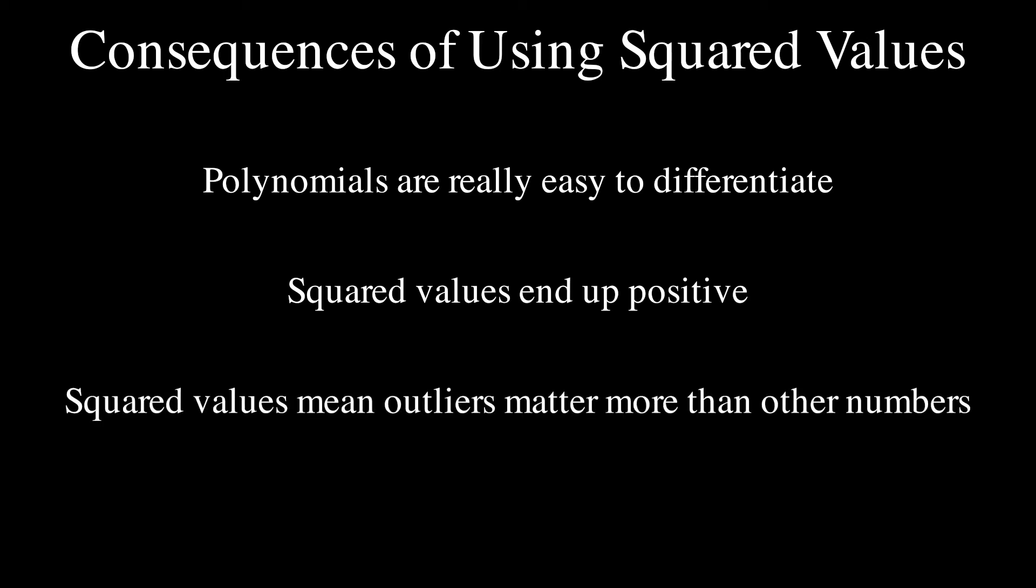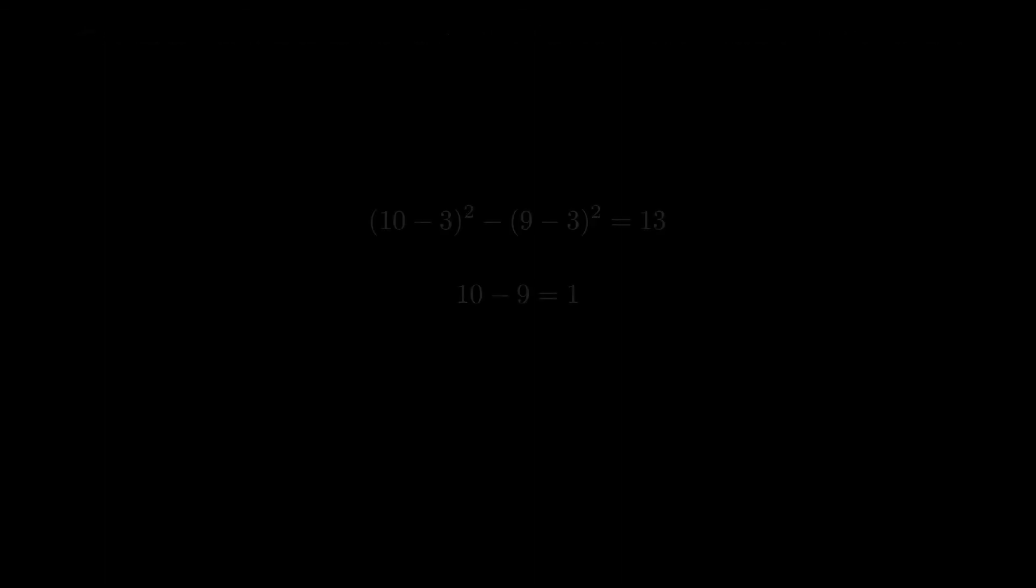Unlike the median, having squared values means that outliers matter more. Slightly larger numbers squared contribute to the sum much more than slightly smaller numbers squared. 10 minus 3 squared is 13 larger than 9 minus 3 squared, even though 10 is only 1 larger than 9.